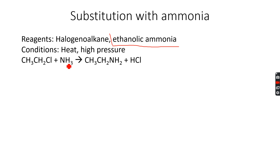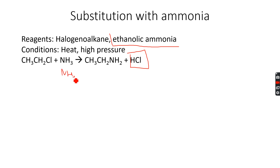One hydrogen atom from the ammonia bonds with the Cl to form HCl. The NH2 that is left — because you've taken out one hydrogen atom — is what substitutes the Cl atom. So from the halogenoalkane you get the amine, and this is ethylamine.